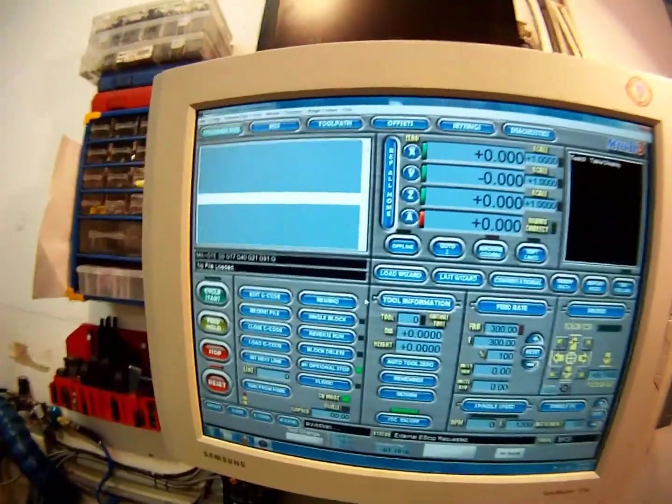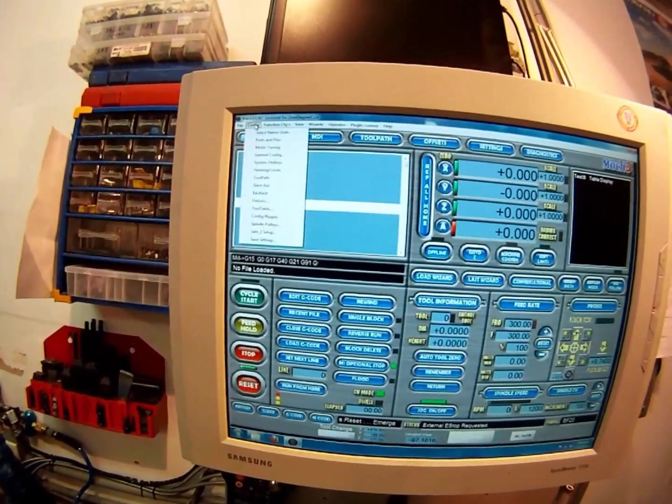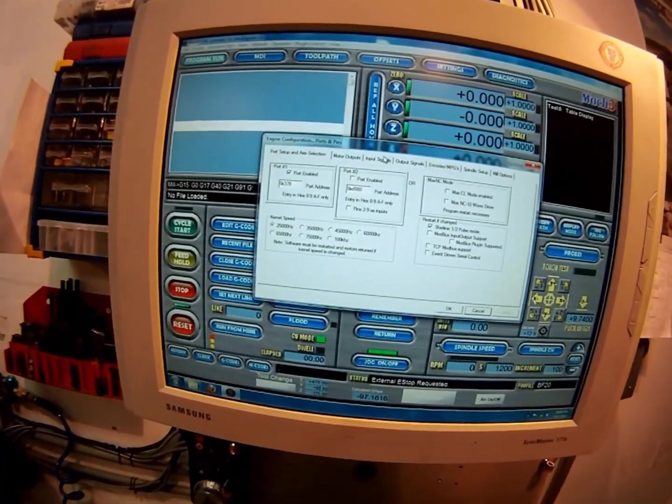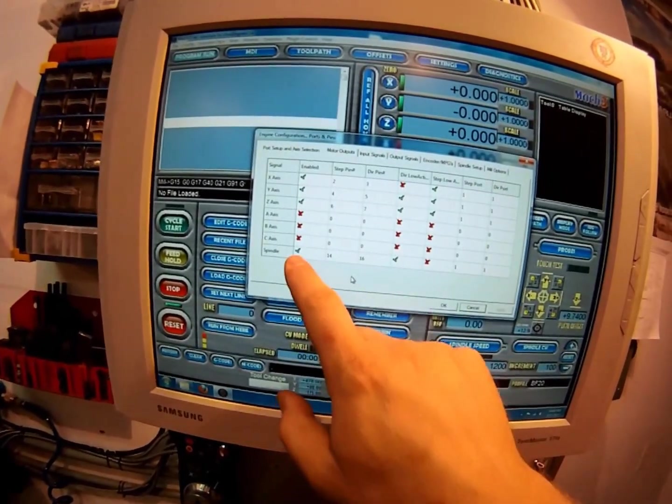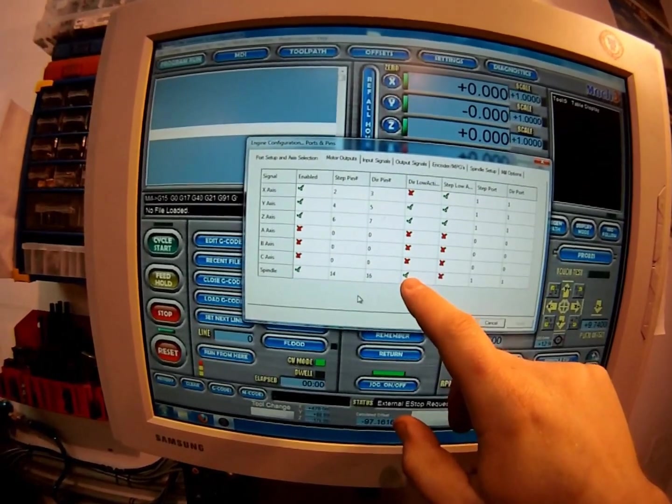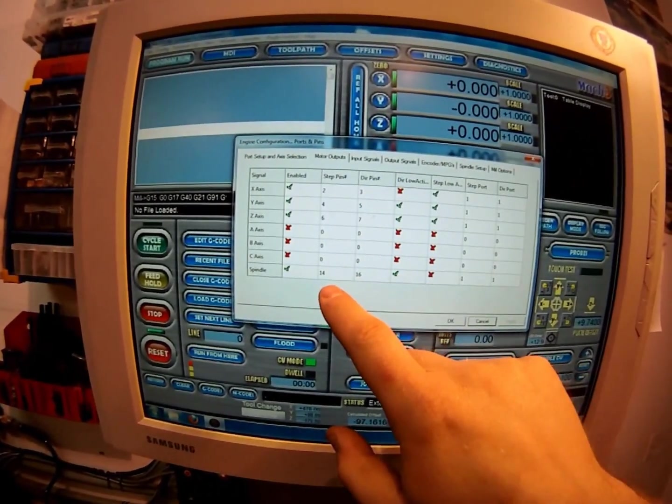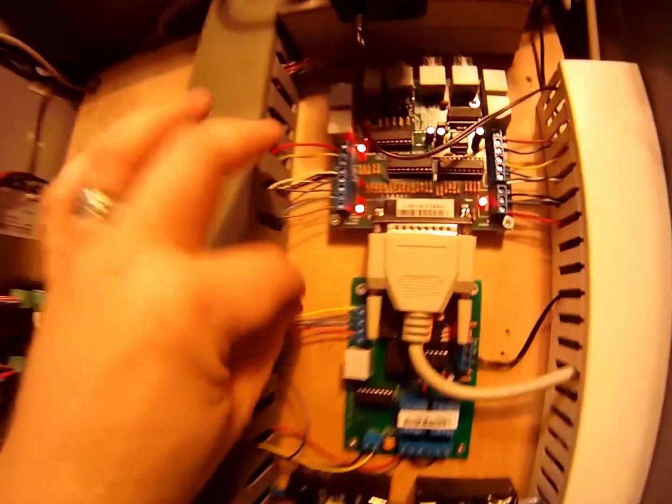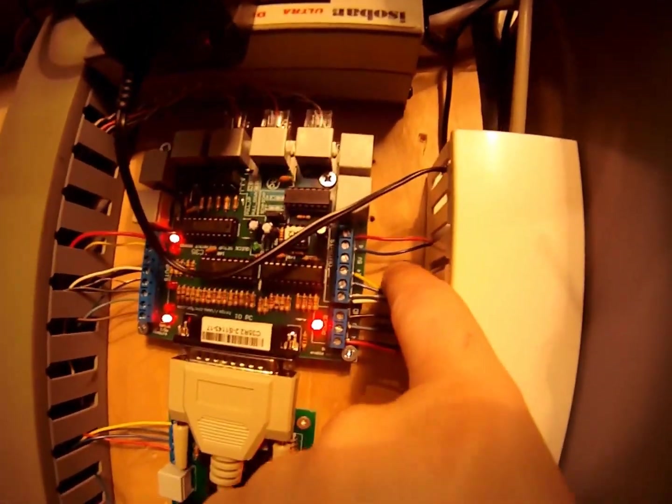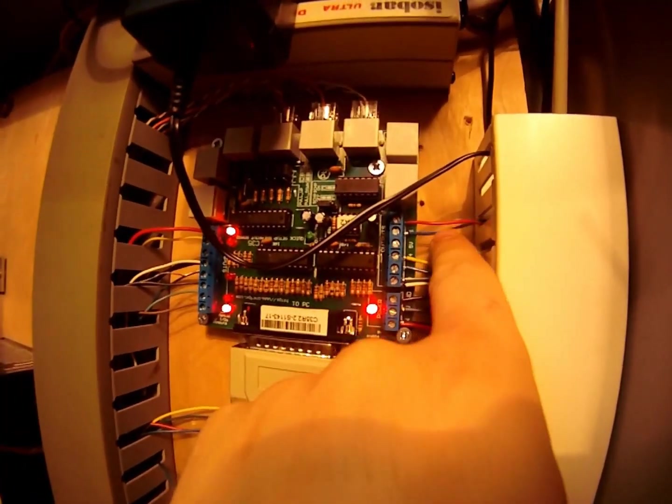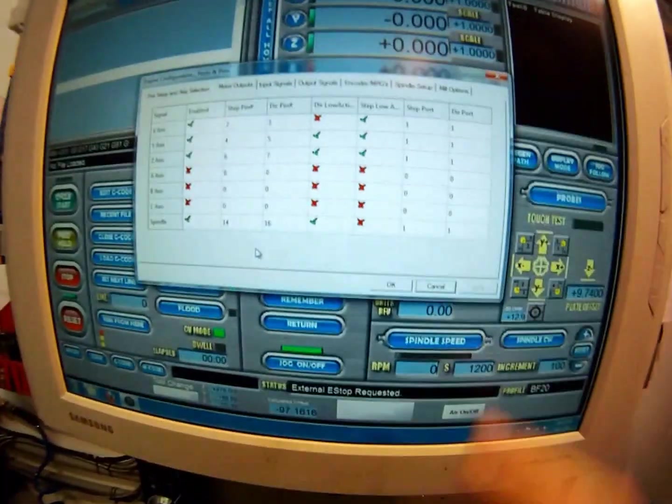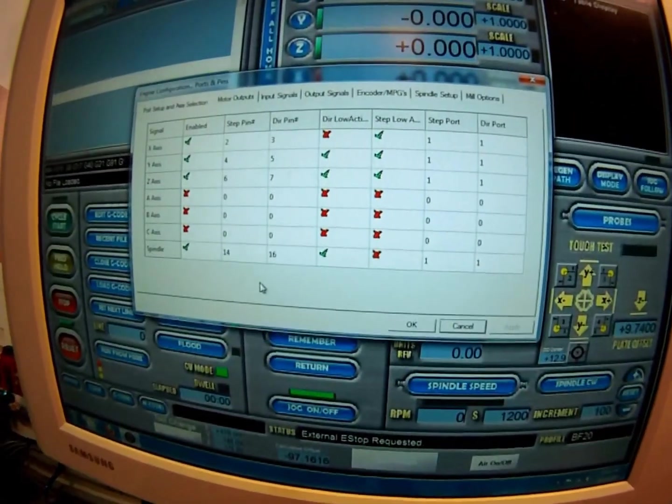So under Configuration, I'm going to go to Ports and Pins, Motor Outputs. I have my spindle selected, I have direction low active selected. Step is 14, direction is 16. So the step, which was this yellow, is 14, direction, which is this blue, is 16. Remember I mentioned the 17 for enable/disable, I'll show you that. Of course, in my case I have it set up on port number one.